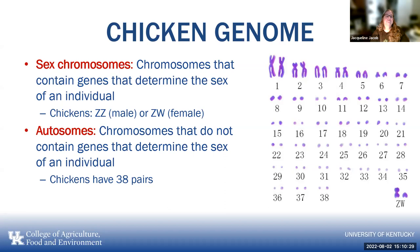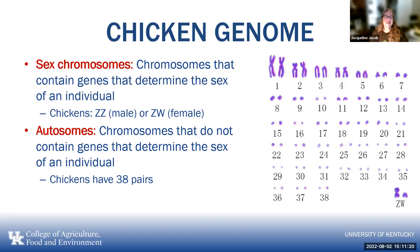Chickens are similar — they have sex chromosomes as well, but they are not XY; they are Z and W. In mammals the male is heterozygous, donating X or Y sperm, but in chickens and all birds, the male is ZZ and can only contribute a Z chromosome. The female is ZW and therefore genetically determines the sex of the offspring — the total reverse from mammals, including humans.